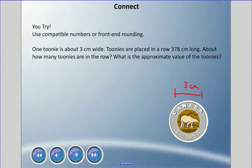Toonies are placed in a row 378 centimeters long. About how many toonies are in the row, and what is the approximate value of the toonies - how much money are we talking here? So there's two parts to this question: about how many toonies could fit in a row of 378 centimeters, and what is the approximate value? You need to answer the first one before you can answer the second one. So pause it here and come back when you're ready.